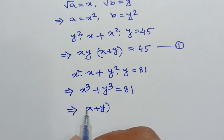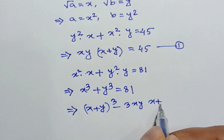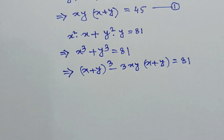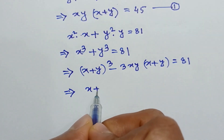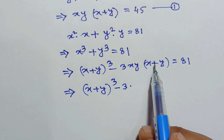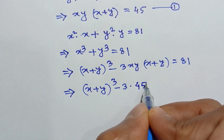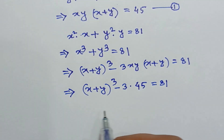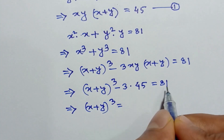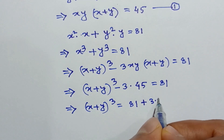Applying the formula, x cubed plus y cubed equals (x plus y) cubed minus 3xy(x plus y). Substituting xy(x plus y) equals 45 from equation 1, we get (x plus y) cubed minus 3 times 45 is equal to 81. Moving the 3 times 45 to the right side, we have (x plus y) cubed equals 81 plus 3 times 45.